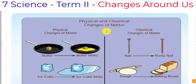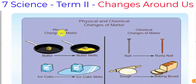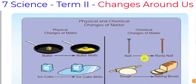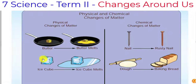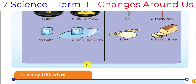In this diagram, one is physical change and another is chemical change. This is the change of matter. We are going to see about chemical changes.